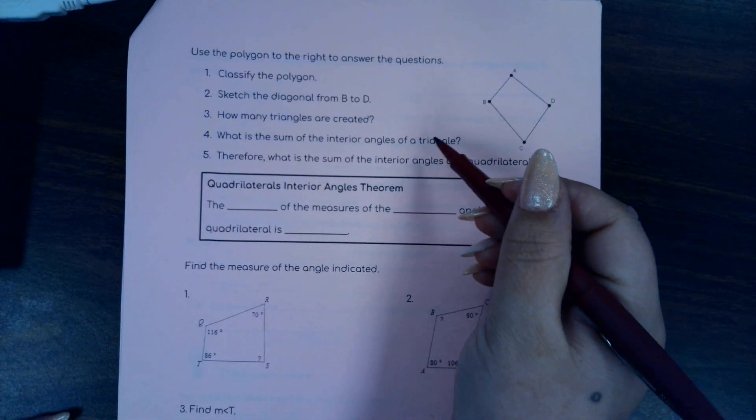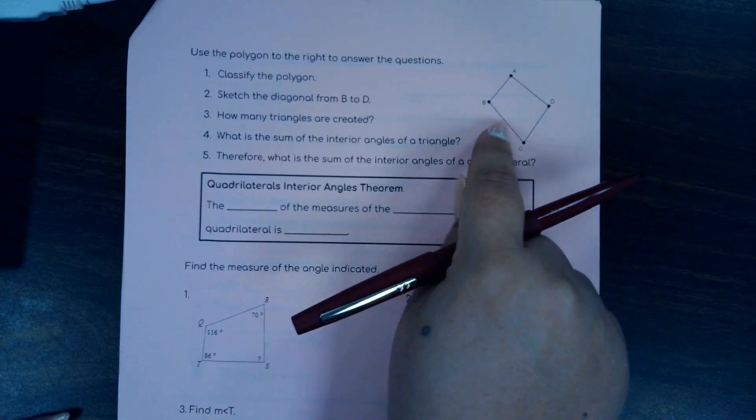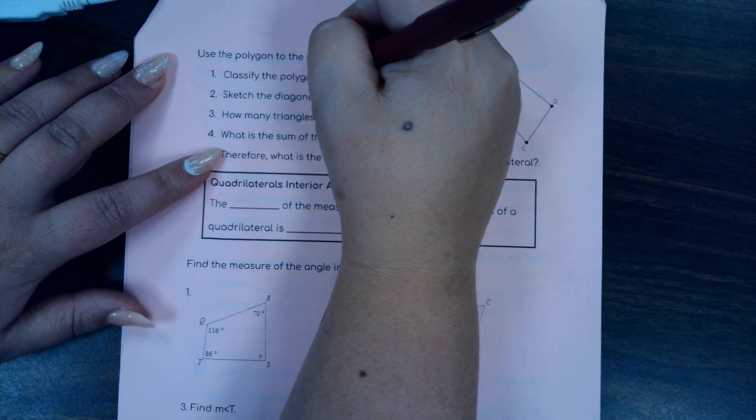We're going to use this polygon to the right and answer some of these questions. So first, classify the polygon. Well, one, two, three, four. This is a quadrilateral.